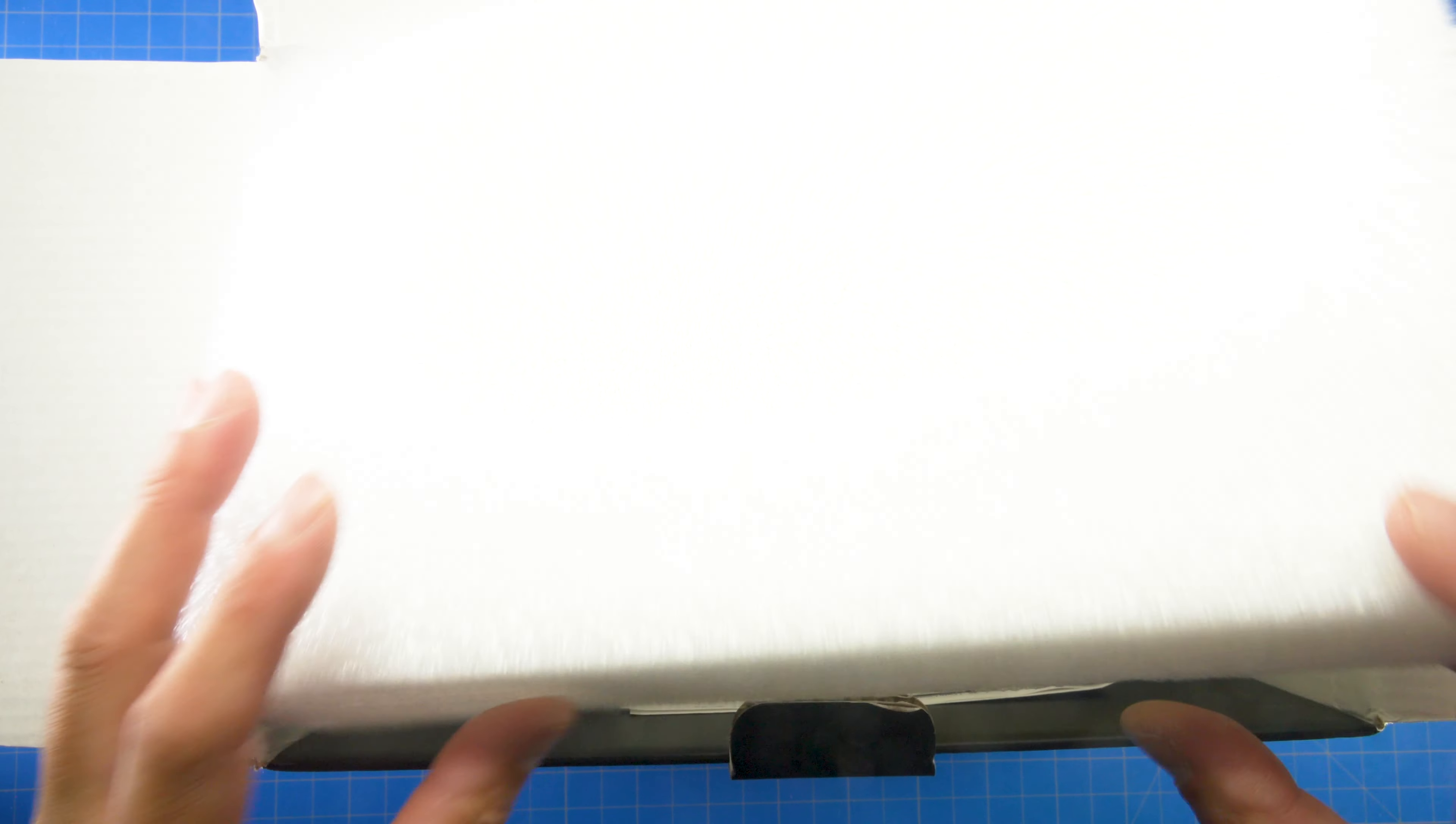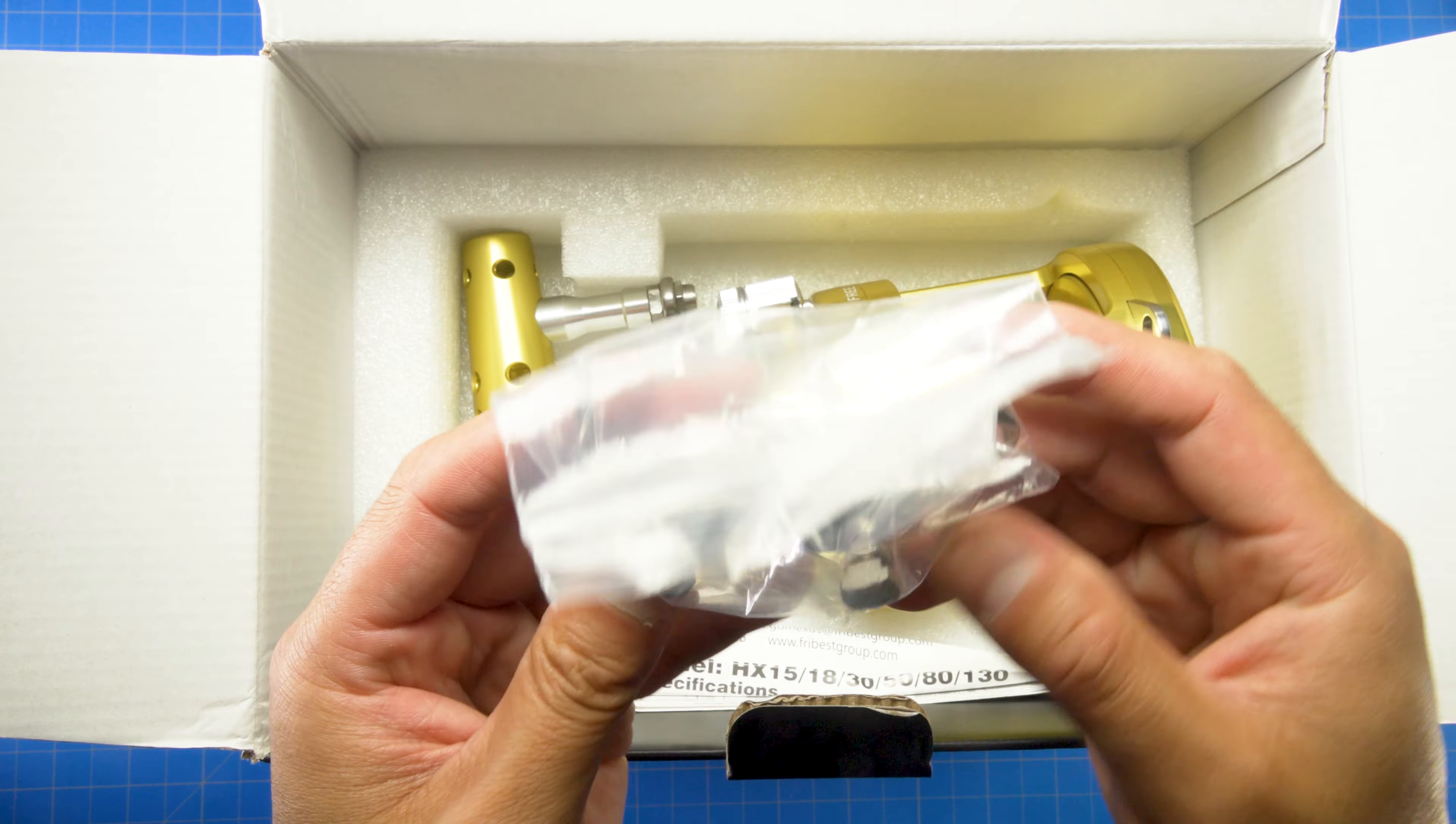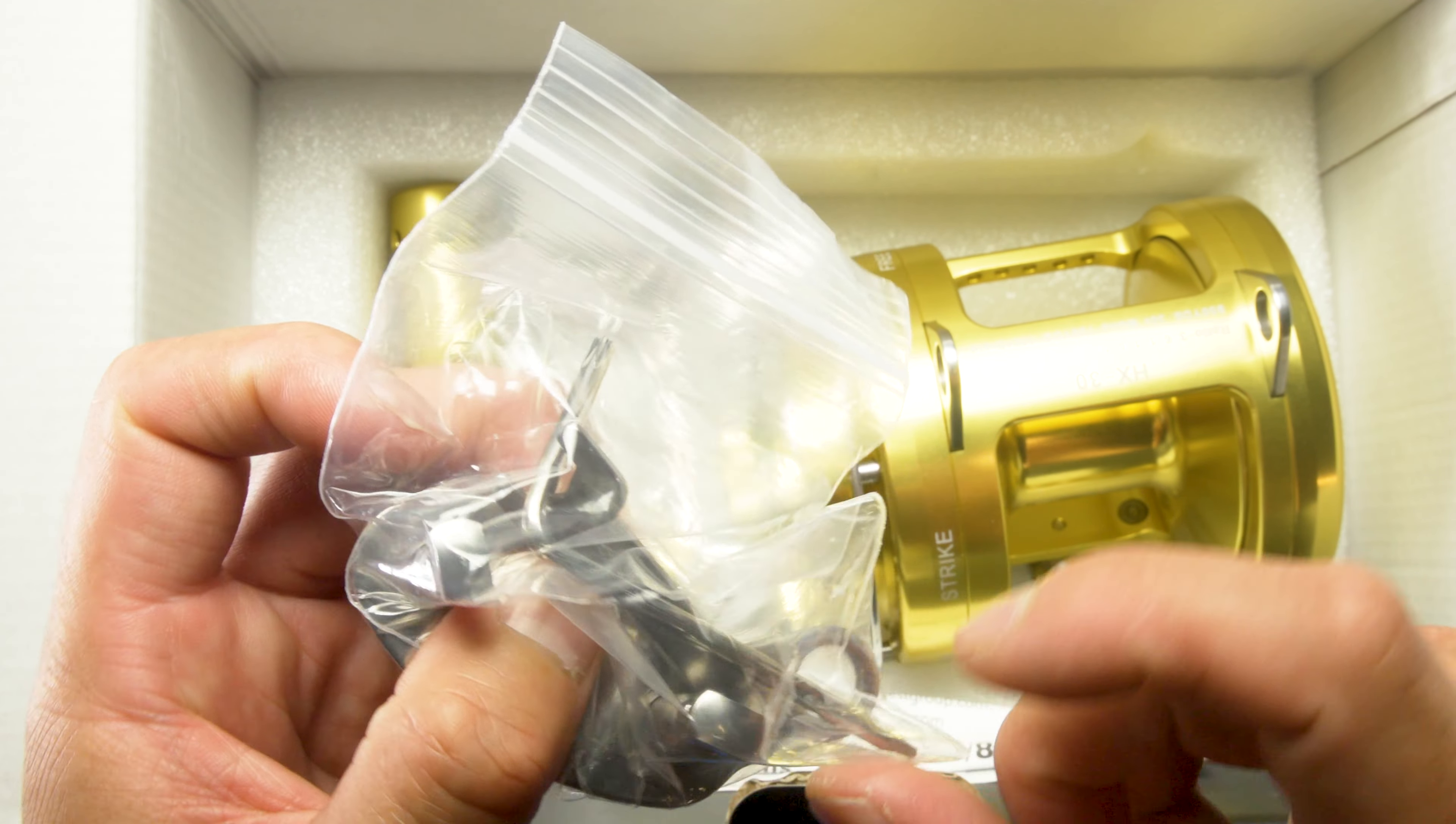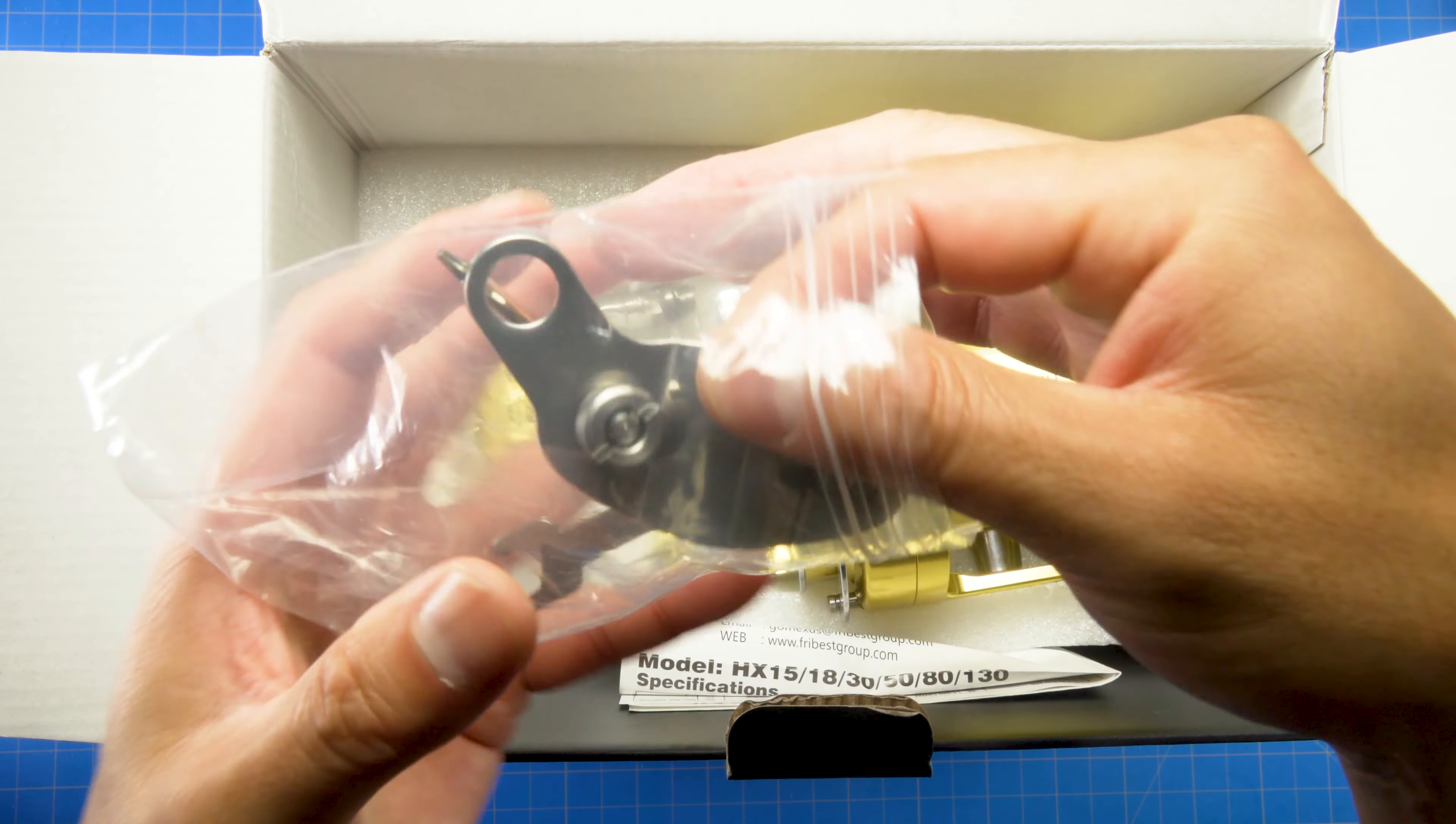So let's take a look at the reel itself. Parts-wise, we have here your clamp, hex style key for tools, and a little wrench right there. Your clamps, pretty standard. Nothing fancy. Looks like stamped steel.